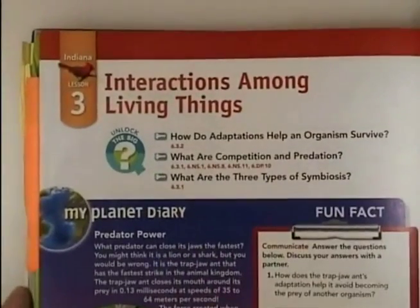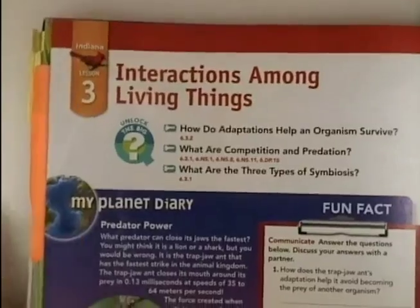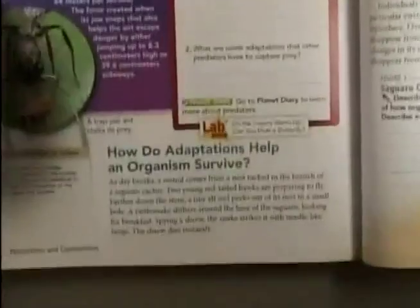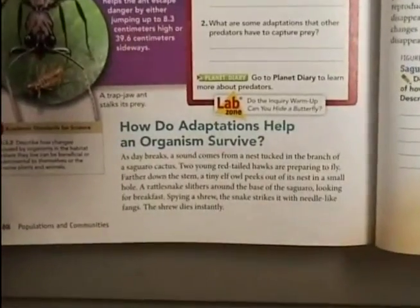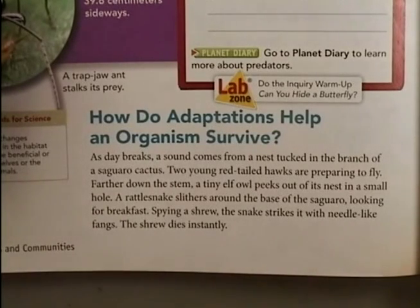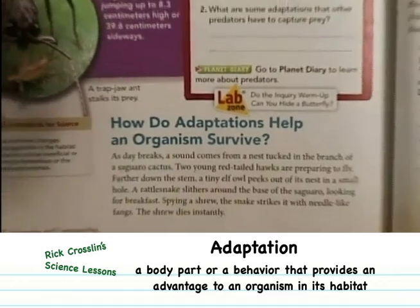Let's take a look at that. We're going to learn about interactions among living things and talk about how adaptations help an organism survive. An adaptation is a behavior or a physical characteristic that allows an organism to live successfully in their environment.